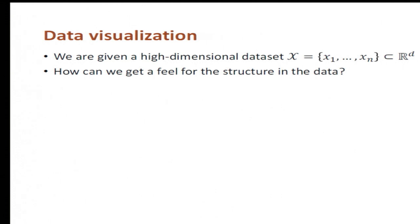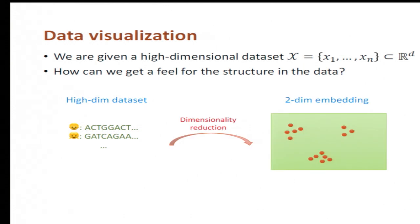For example, suppose our high-dimensional dataset contains some genomic information of different people. We won't be able to tell anything just by looking at this data. But a simple idea is to do dimensionality reduction, and more specifically, to reduce the data dimension to two.